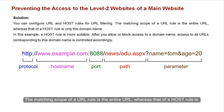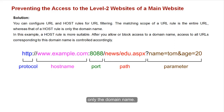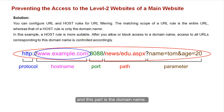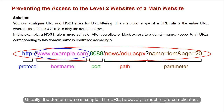The matching scope of a URL rule is the entire URL, whereas that of a host rule is only the domain name. As shown in the following figure, this string is the entire URL, and this part is the domain name. Usually, the domain name is simple. The URL, however, is much more complicated.